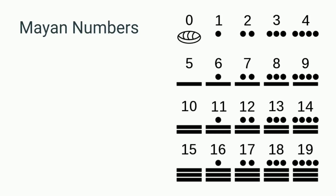The 0 is denoted with a shell. So if we continued counting, the next numeral would be 20